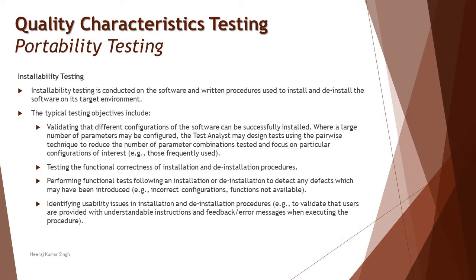Installability involves validating that different configurations of the software can be successfully installed in different environments, testing the functional correctness of the installation process, performing functional tests after installation to make sure the system works as expected in the target environment, and identifying any usability issues in the installation or uninstallation procedures. In summary, installability means a user should be able to download, install, and at any point uninstall the application.